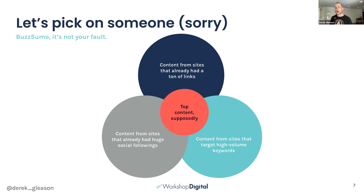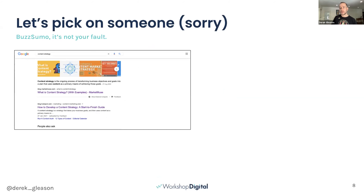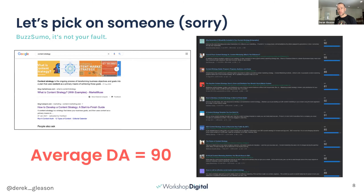We're supposed to believe top content resides in the middle of linked, shared, and organic-performing stuff, but lots of little biases are built in. For example, if you pull top-ranked content for 'content strategy' in Ahrefs, the average domain authority is 90. So we're left believing only the 1,000 most powerful websites are publishing amazing stuff on content strategy — or we have to accept that traditional research is biased toward really big websites, and we have to figure out a way around that.